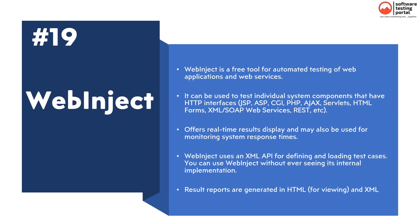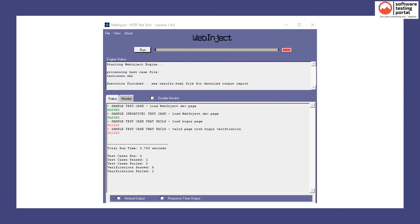The 19th API testing tool is WebInject. WebInject is a free tool for automated testing of web applications and web services. It can be used to test individual system components that have HTTP interfaces, including JSP, ASP, CGI, PHP, AJAX, servlets, HTML forms, XML, SOAP web services, REST, and many more. It offers real-time results display and may also be used for monitoring system response times. WebInject uses an XML API for defining and loading test cases, and result reports are generated in HTML and XML. This is the sample page to run the test in WebInject.